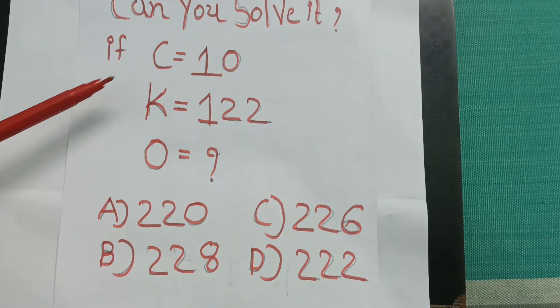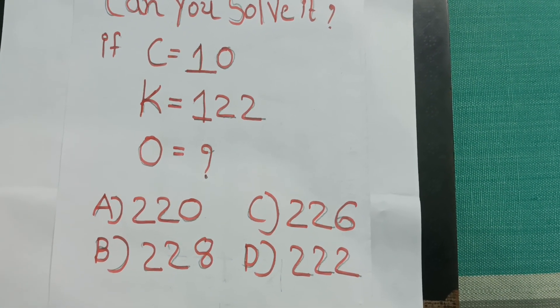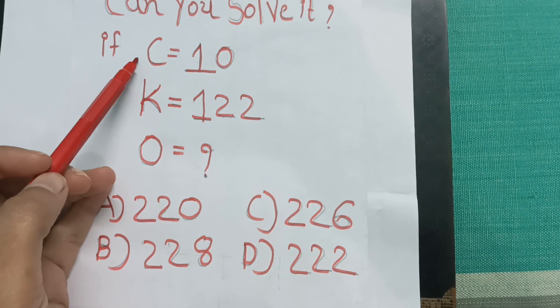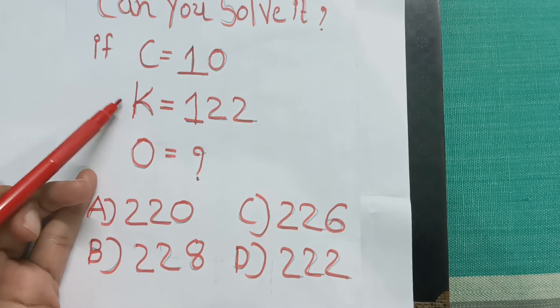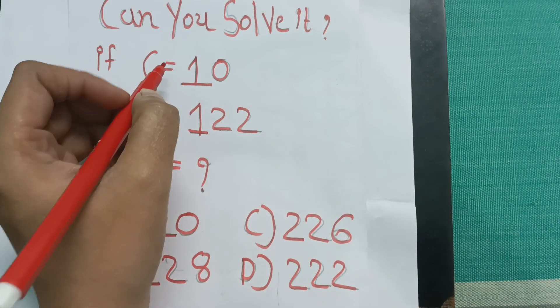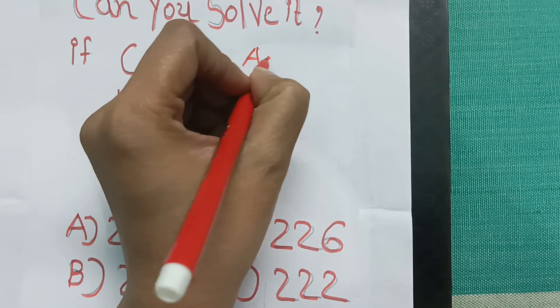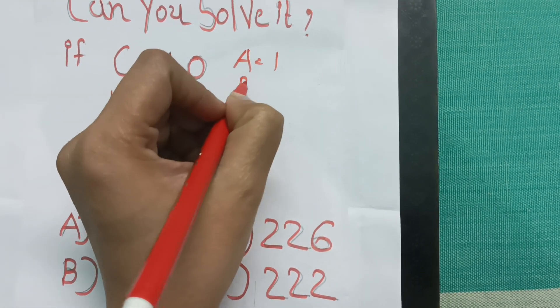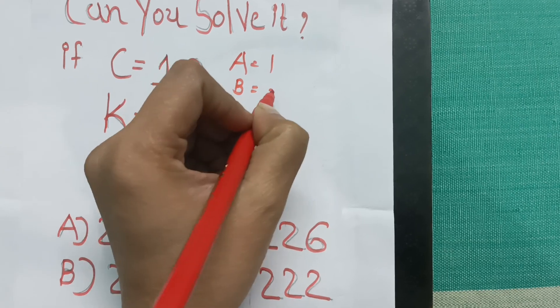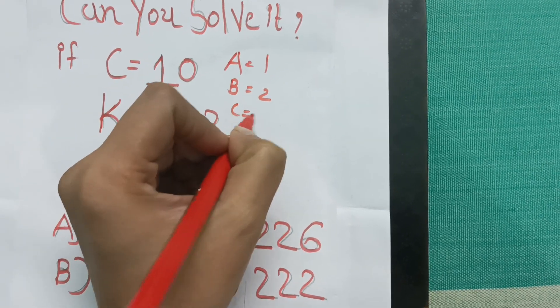Whenever this type of question is in front of you, what you have to see is the alphabetical order number. A's alphabetical order is 1, B's alphabetical order is 2, so C's is 3.